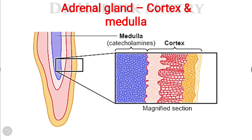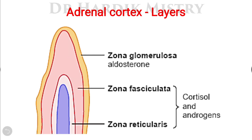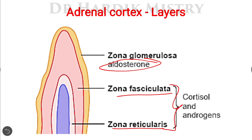The adrenal gland has a cortex and medulla. The medulla is the innermost central part, and the cortex surrounds the medullary portion. The cortex has three different parts: the outermost zona glomerulosa, which secretes aldosterone; the zona fasciculata; and the innermost zona reticularis, which surrounds the medulla. Zona fasciculata and zona reticularis both secrete cortisol and androgens — these are steroid hormones. Aldosterone is a mineralocorticoid and cortisol is a glucocorticoid.